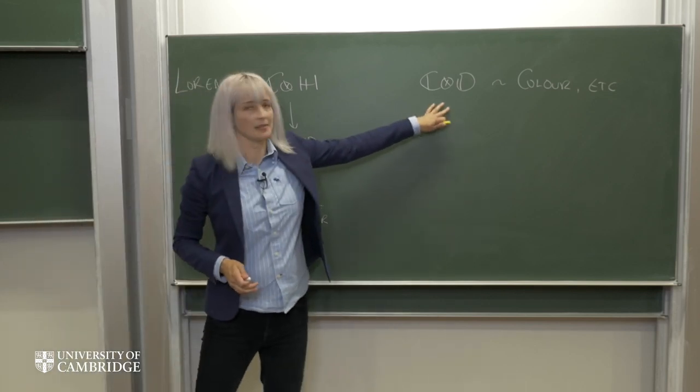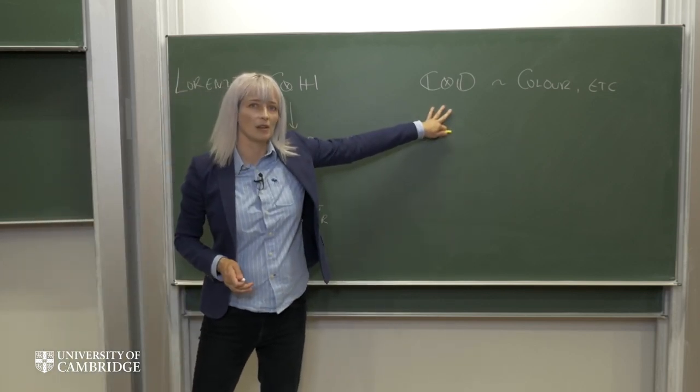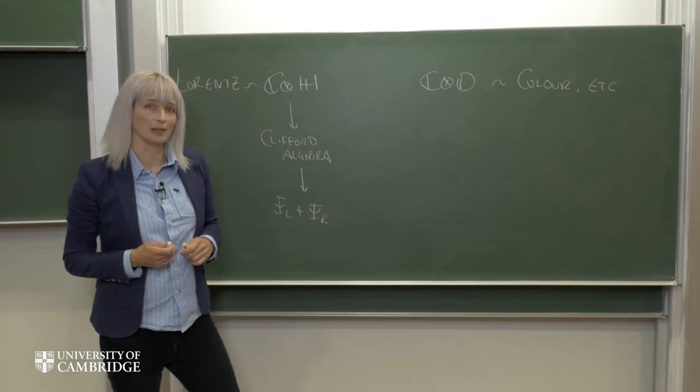And then we're going to repeat the process, this time using the complex octonions. So we're going to find that they lead to a Clifford algebra.